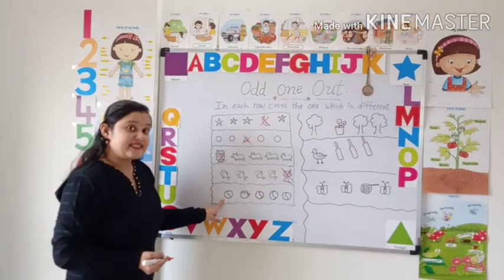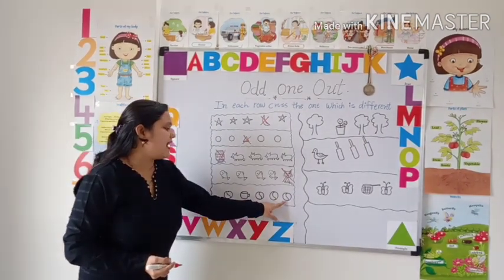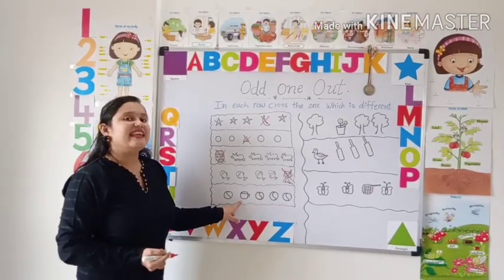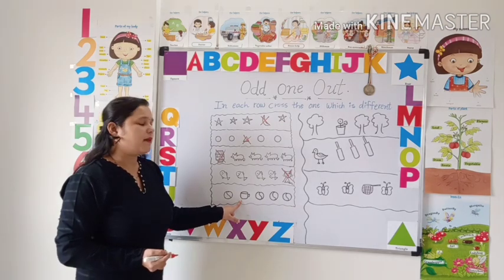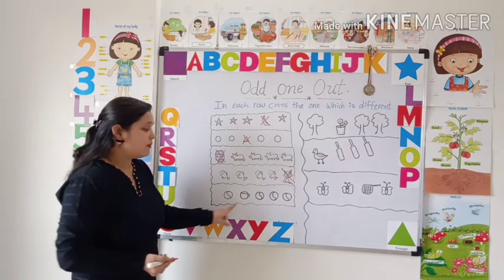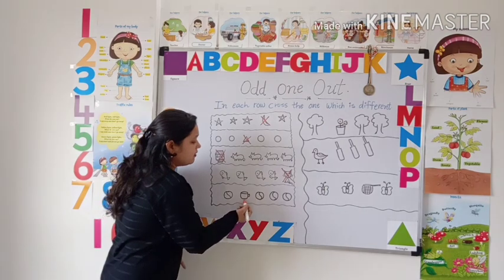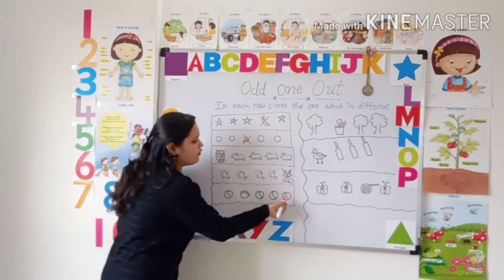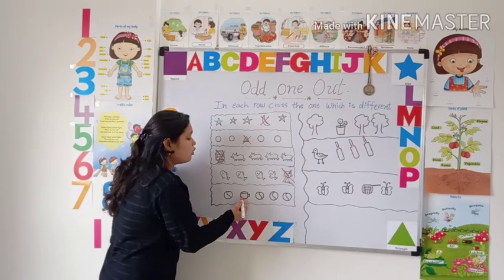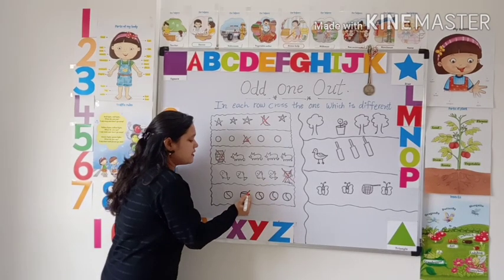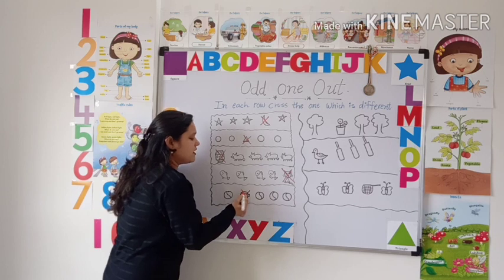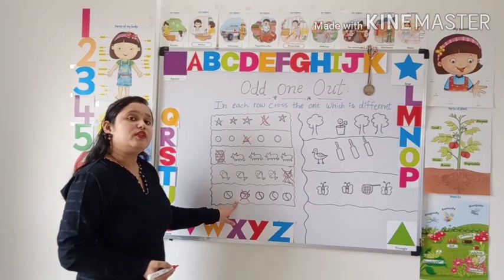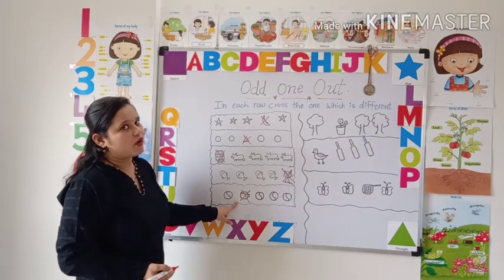What is this? Balls. Yes, these are balls. But what is this? Yes, this is a cup. This one is different from others. So this is the odd one. We will put the cross on the odd one.